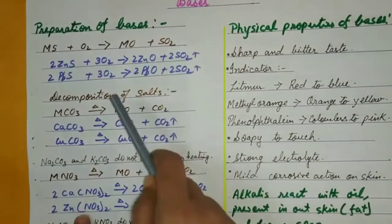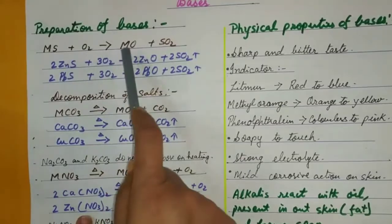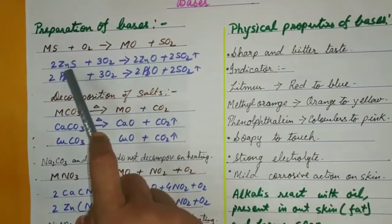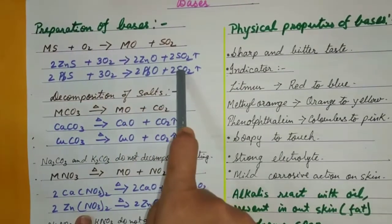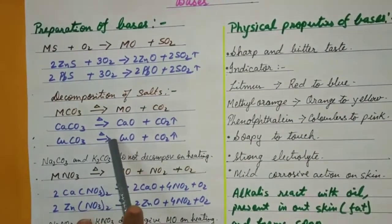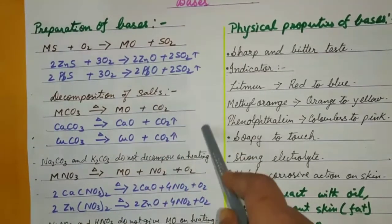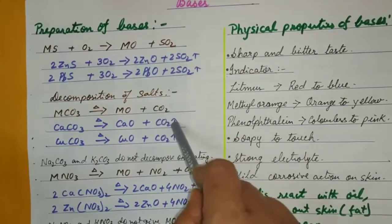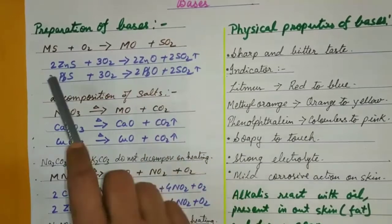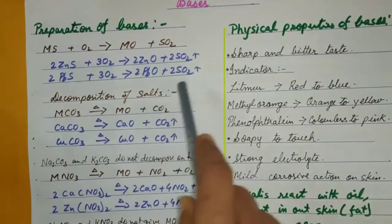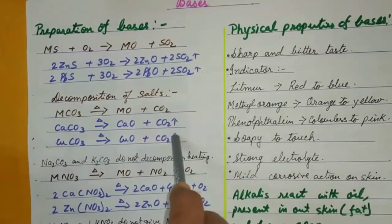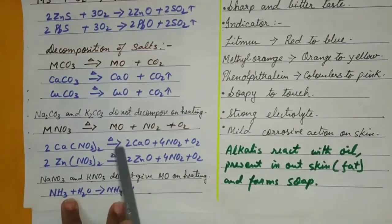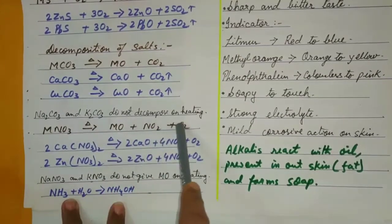Another method: metal sulfide with oxygen gives metal oxide and sulfur dioxide. Decomposition is also a method — metal carbonate gives metal oxide and carbon dioxide. These equations are important because in questions you will be asked to prepare something from something, like zinc oxide from zinc sulfide, and to complete equations. It is very important for students of standard nine and ten to prepare chemical equations properly.